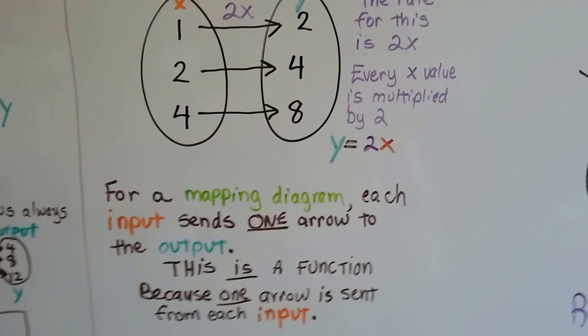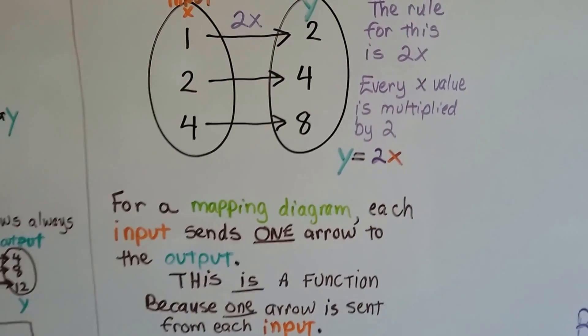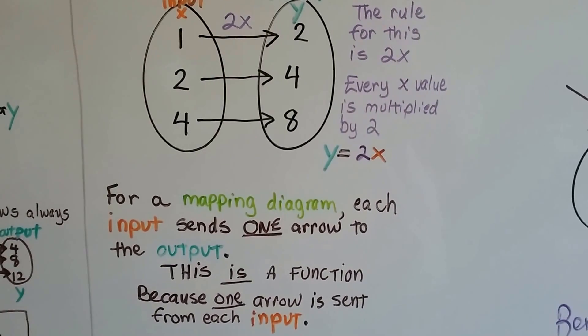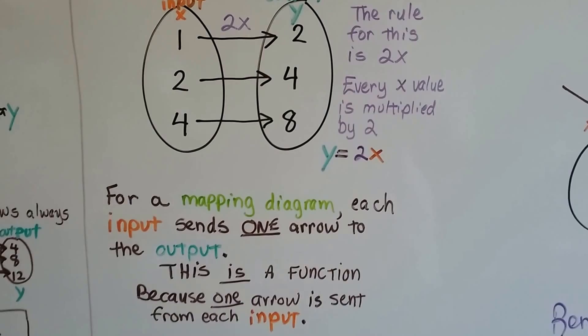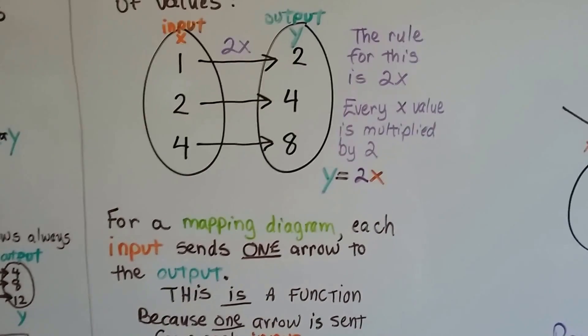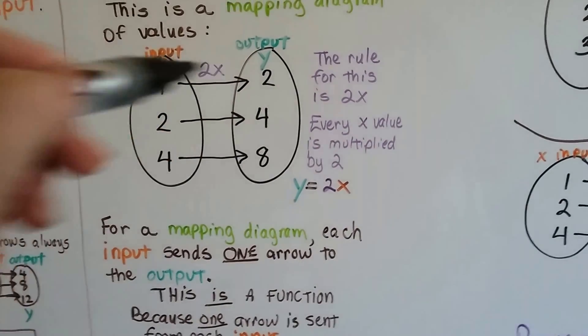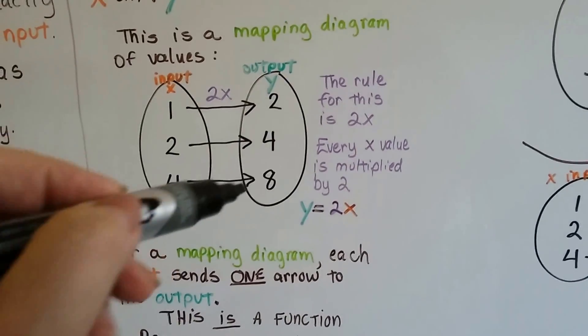And for a mapping diagram, each input sends one arrow to the output. This is a function because one arrow is sent from each input. There's only one arrow coming from each input. See that?